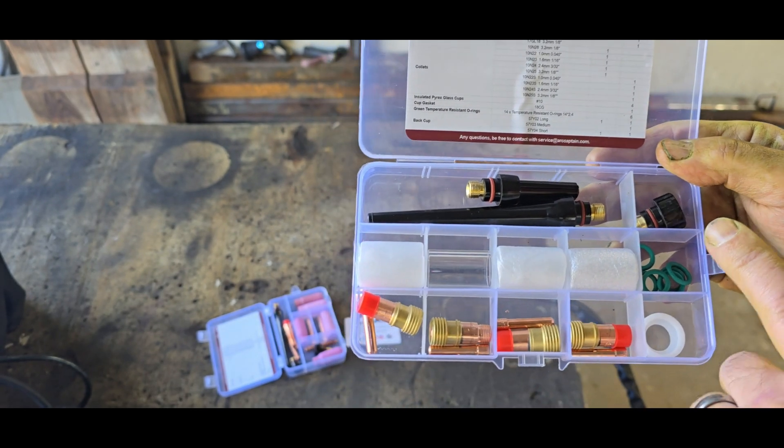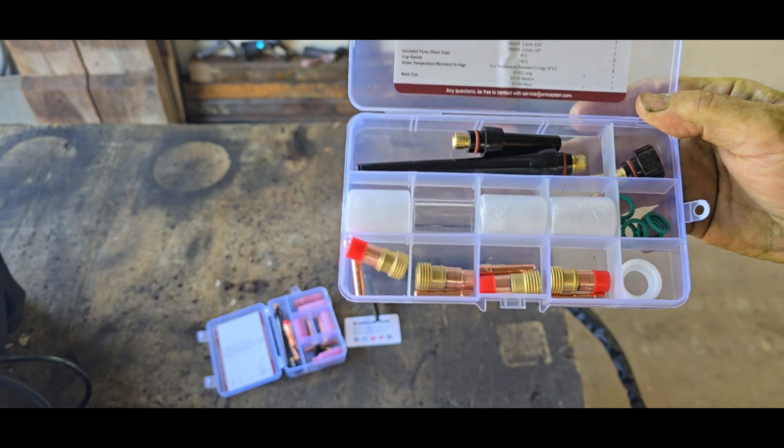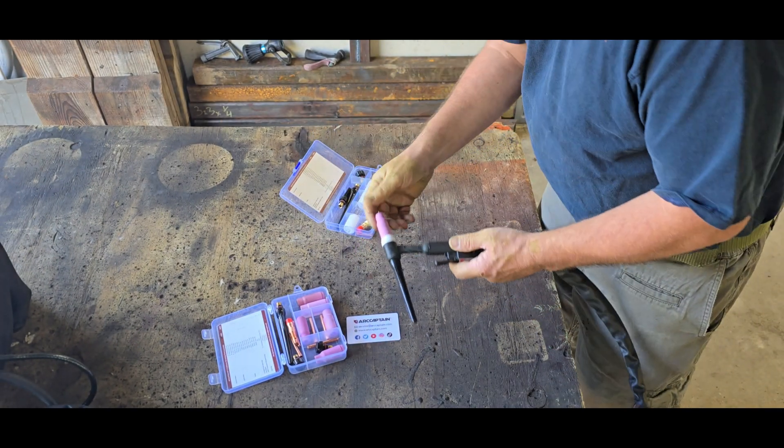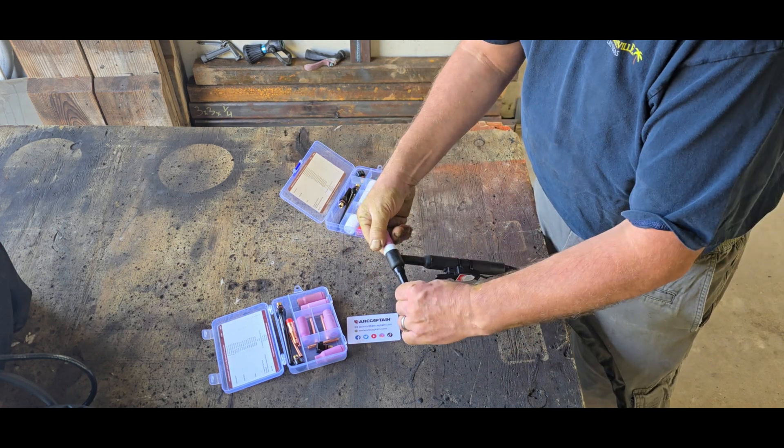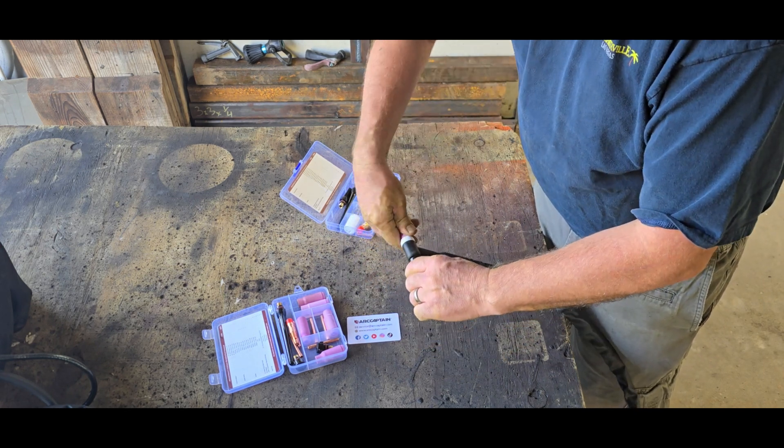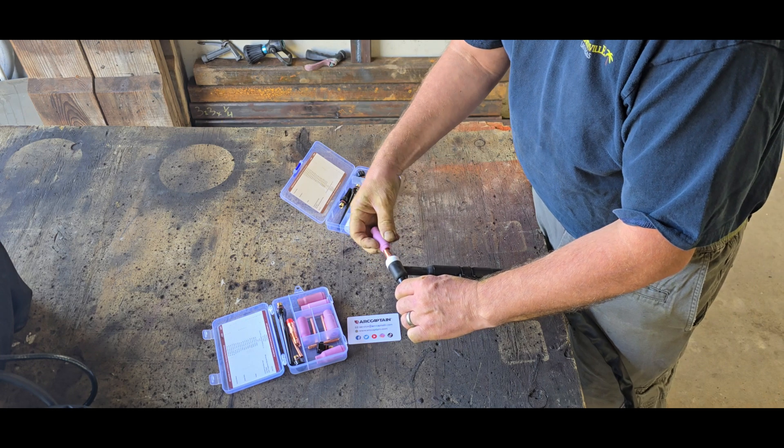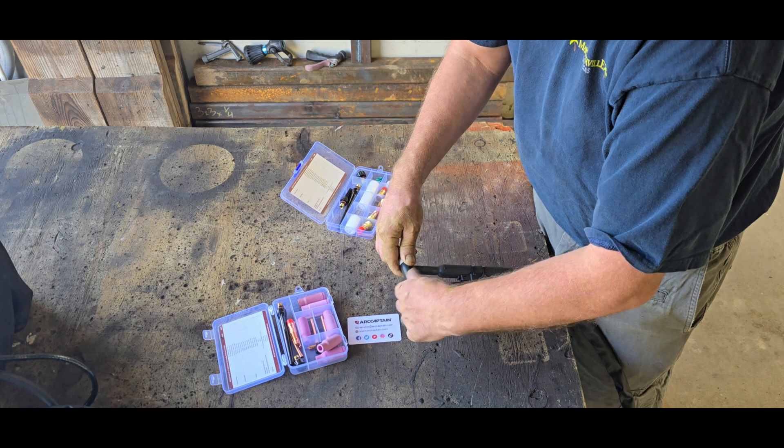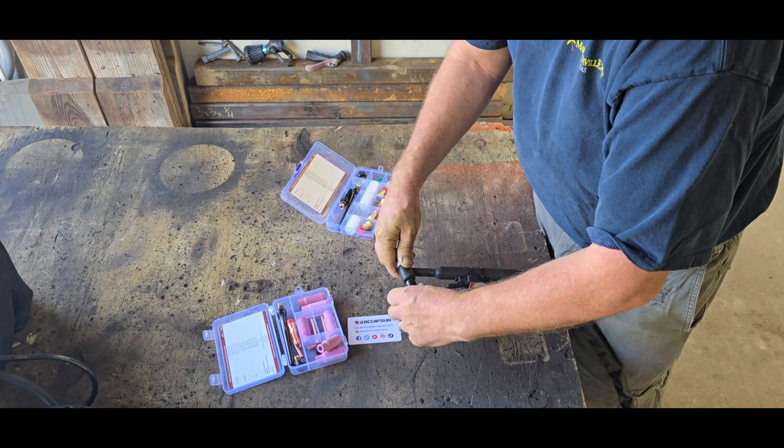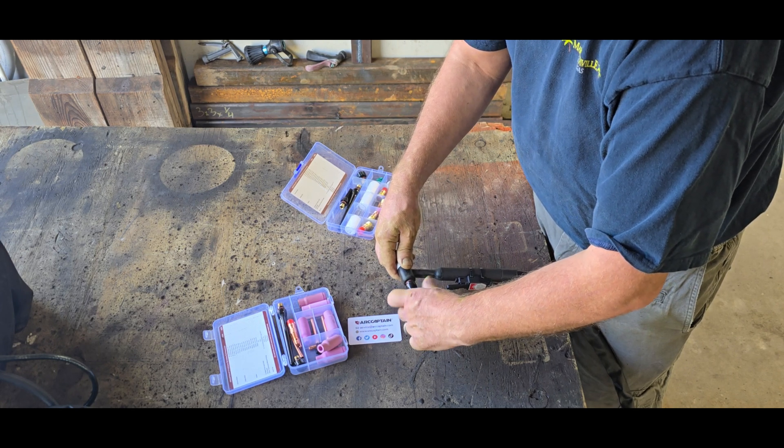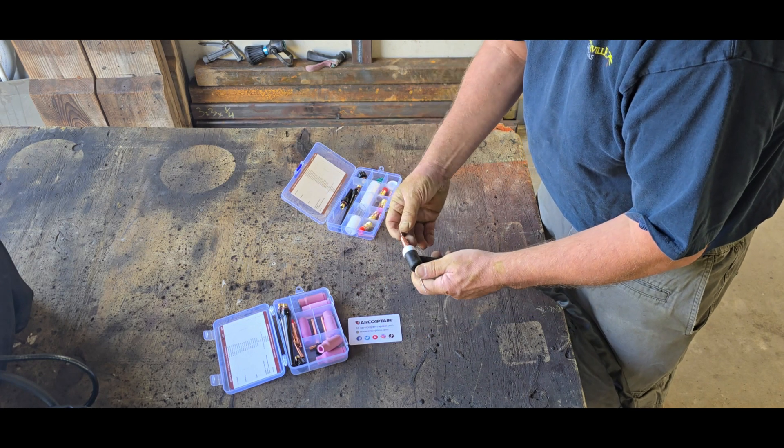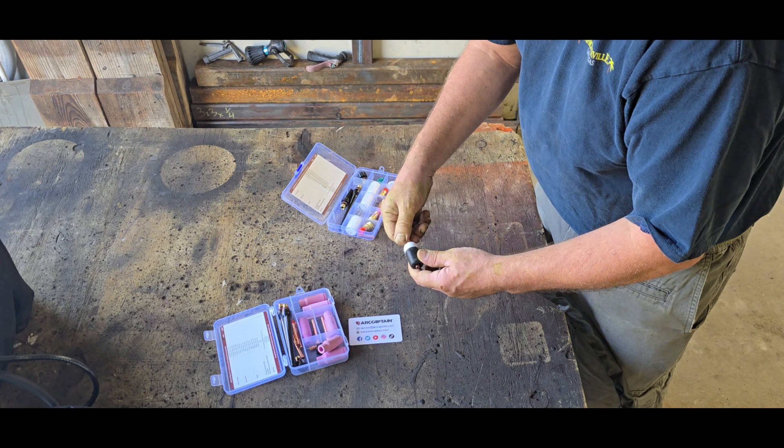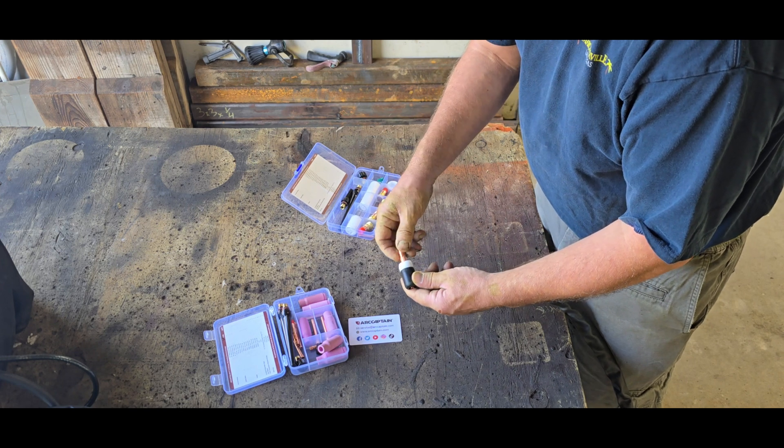I'm going to show you taking the standard setup off. You start either end, it doesn't matter if you loosen this or this. We're going to take our ceramic off and loosen our tungsten holder nut. We'll set that aside for a minute. We're going to take our tungsten out, set it over here, and we're going to unthread this.